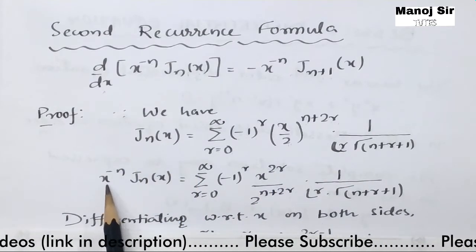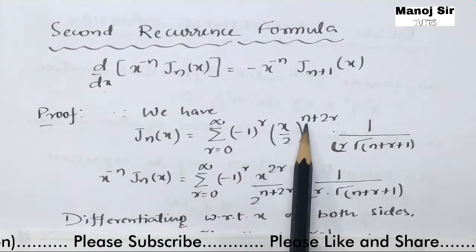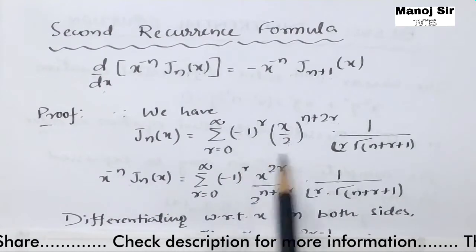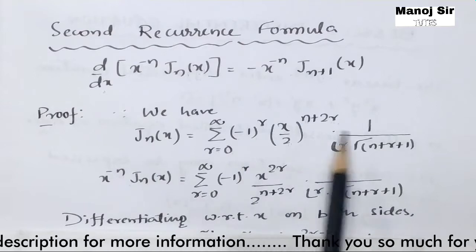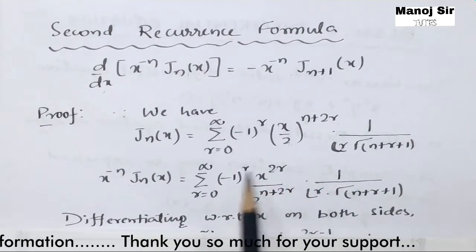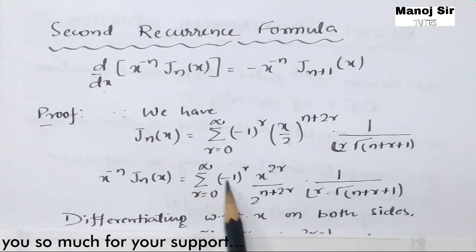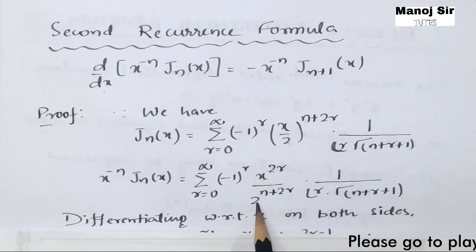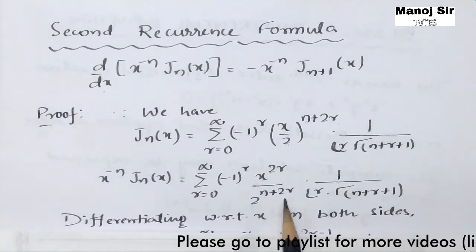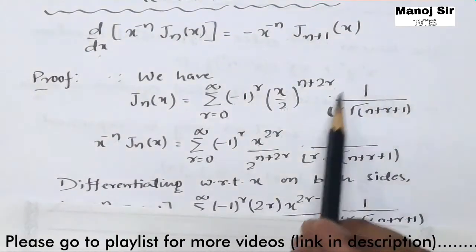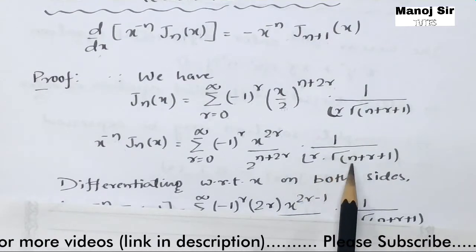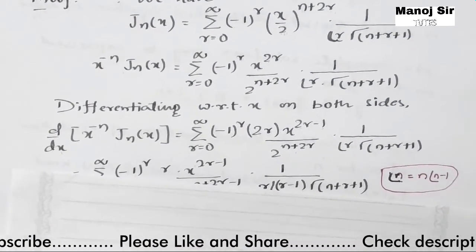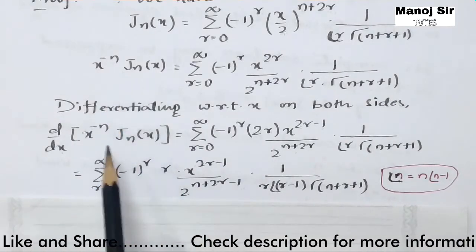Multiplying both sides by x^{-n}: the power of x is n+2r; multiplying by x^{-n} cancels the n, leaving x^{2r}. So x^{-n} J_n(x) equals summation r=0 to infinity of (-1)^r times x^{2r} divided by 2^{n+2r} times r! times Gamma(n+r+1). Now we differentiate both sides with respect to x.